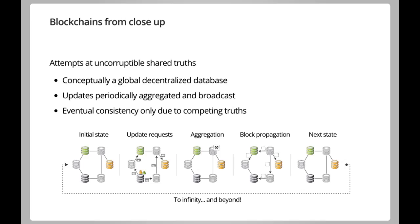What's interesting compared to general peer-to-peer networks is that your average peer-to-peer network is used as a concurrent distribution network — either real-time like Skype or non-real-time like BitTorrent. The idea is that you transfer data from A to B. Whereas with blockchains, you don't transfer data — you actually run a consensus protocol. You try to agree on something. Philosophically, blockchains try to create an uncorruptible shared truth.